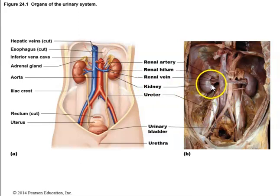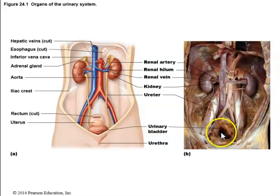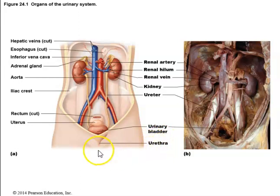The ureters drain urine from the kidney and empty into the urinary bladder. Once the urinary bladder is full, we have micturition — voiding or urination — and urine will leave the body via the urethra.